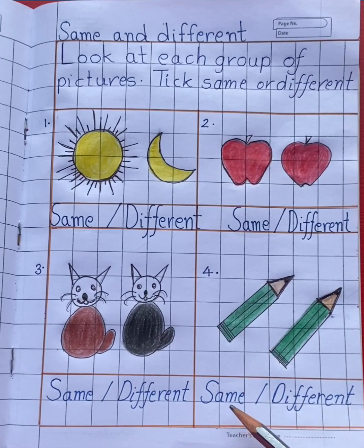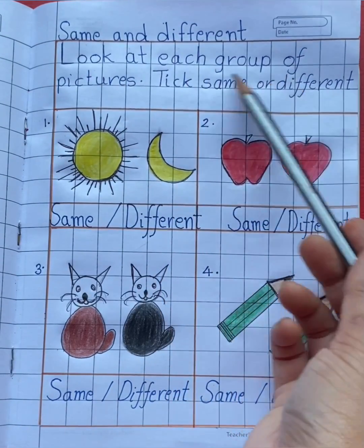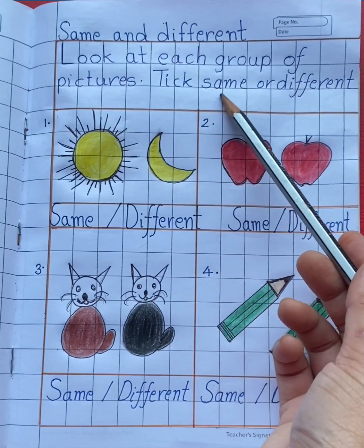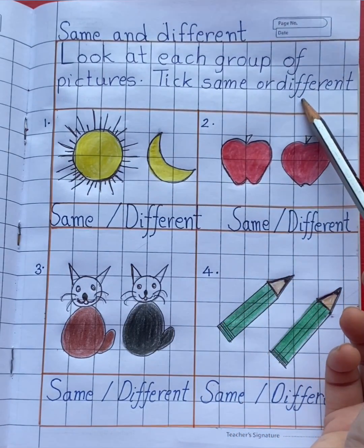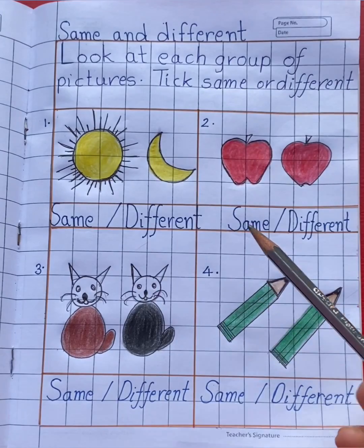Look at each group of pictures. Tick same or different. Now look here, you can see one, two...